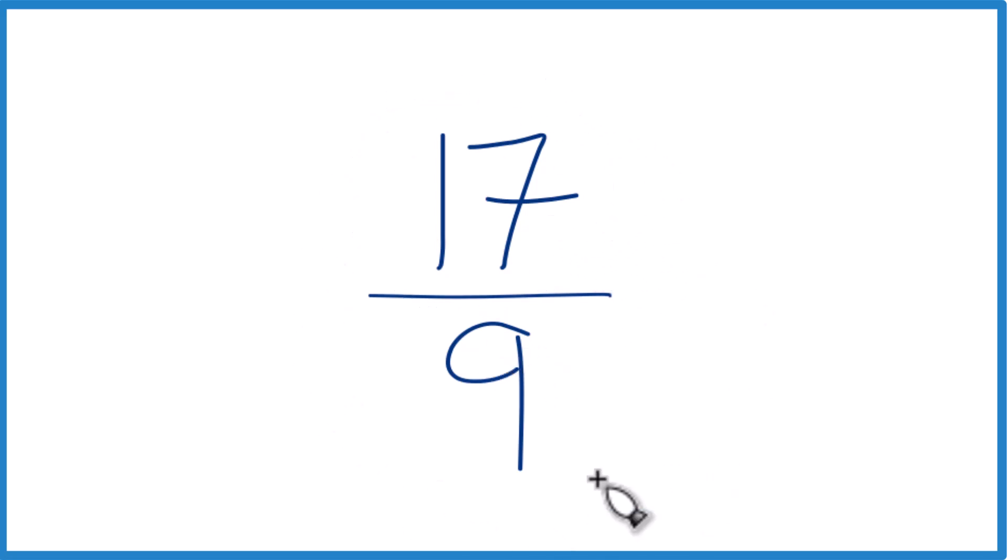We can't simplify the fraction any further because the only number that goes into 17 and 9, the only common number, is 1. That means it's already simplified. But we can change it to a mixed number.